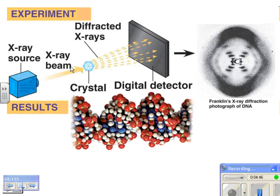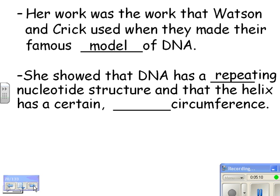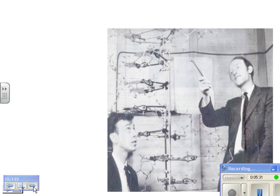Here's what she did: she took her DNA, crystallized it, put an x-ray beam through it, which diffracts the x-rays, and then took a picture of it. This is a photograph of some of the DNA she was looking at. Her work showed that DNA has a repeating nucleotide structure and that the helix has a certain diameter — a certain regular circumference — so it always has about the same circumference. Her work was not recognized for many years because it was published after Watson and Crick's work. The rumor goes that they stole her pictures, and that's why they came out with their model first.